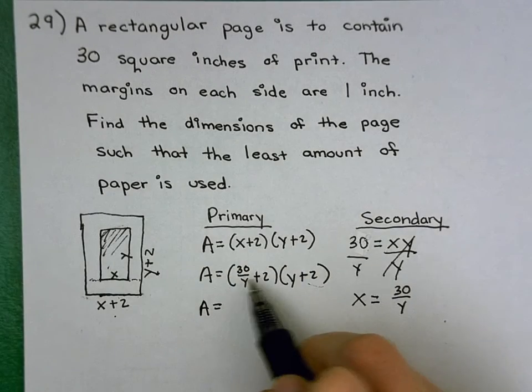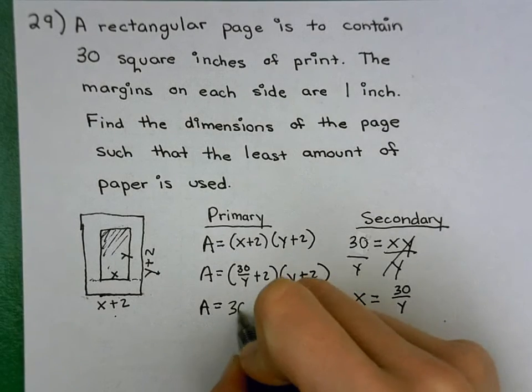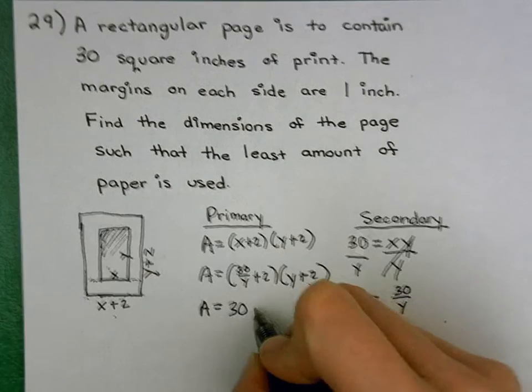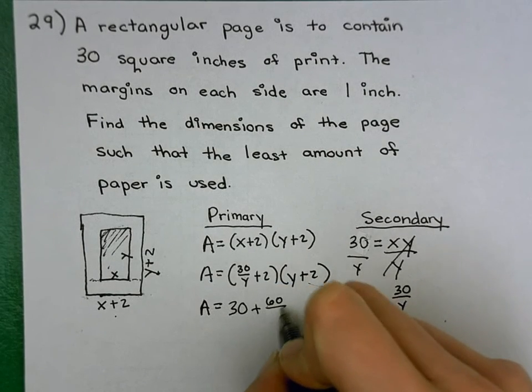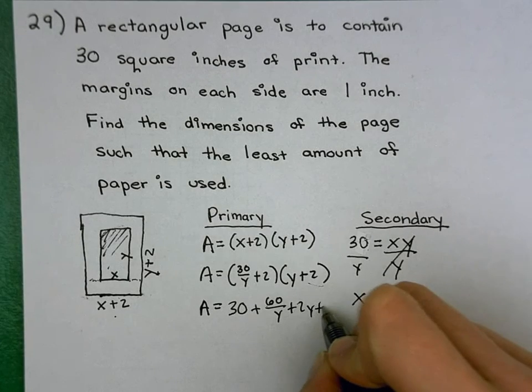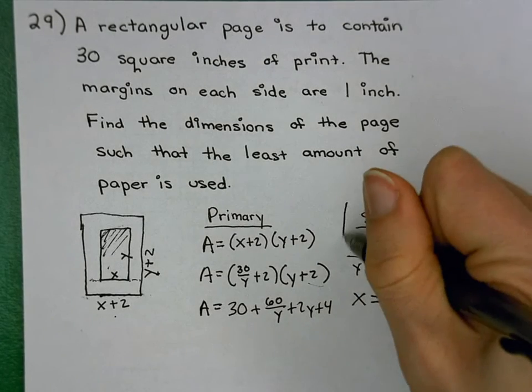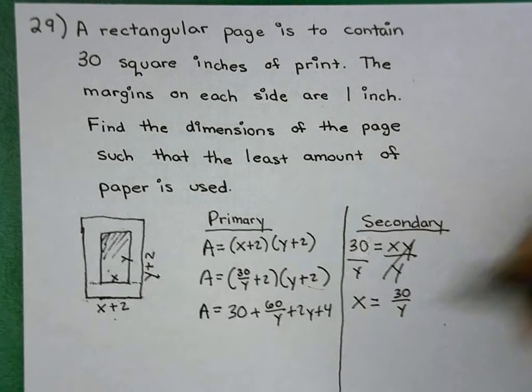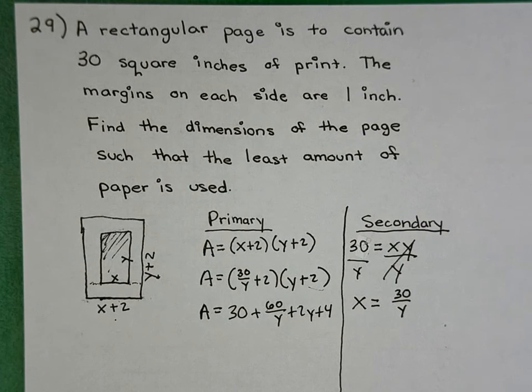So when I do 30 over Y times Y, I get 30. 30 over Y times 2 is 60 over Y. 2 times Y is 2Y, and 2 times 2 is 4. Go ahead and draw a little divider here to make sure we don't accidentally mix up our primary and secondary equations.